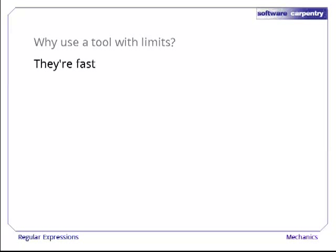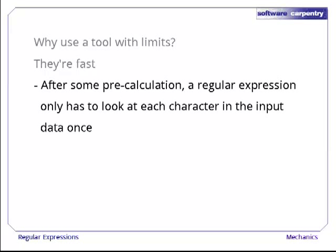There are two answers. The first is they're really fast. After you do some pre-calculation, essentially after you compile the regular expression to create a finite state machine, regular expression can be matched against input by looking at each input character only once. That means the execution time only grows with the size of the data. And the time required for many other matching techniques grows much faster than the size of the input data.